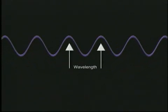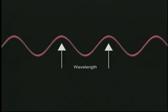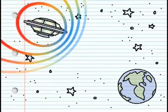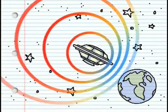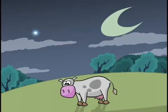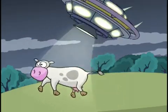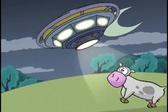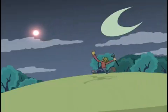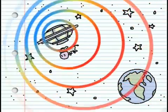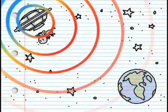Blue light has shorter wavelengths than red light. When an object in space moves towards us, its light waves are compressed into higher frequencies or shorter wavelengths, and hence we say that the light is blue shifted. When an object moves away from us, its light waves are stretched into lower frequencies or longer wavelengths, and we say that the light is red shifted.